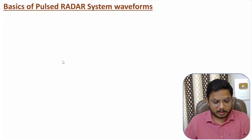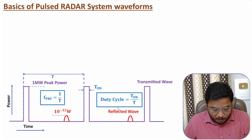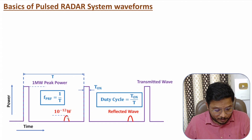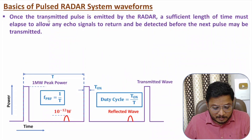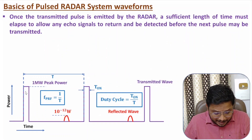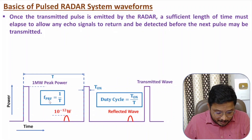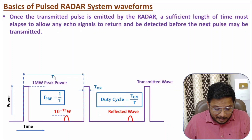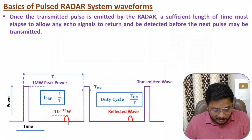There are a few basics to understand. The time delay T must be sufficient enough to wait for the reflected wave. Once a pulse is transmitted by the radar, a sufficient length of time must have elapsed to allow any echo signals to return and be detected before the next pulse may be transmitted. If you increase the frequency, then this delay will decrease, and as this delay decreases, there is a high chance that the reflected pulses may arrive after the second pulse.